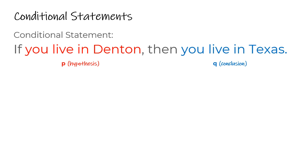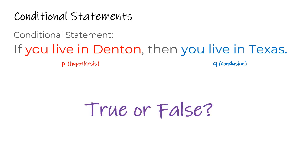To be true, there can't be a single example where this statement could be false. That would make it false if you have one way to prove it false — it's got to be true in all cases. So let's think about this: if you live in Denton, then you live in Texas. Is that true or false? Well, if you know that Denton is in Texas, that's a true statement — if you live in Denton, then you live in the state of Texas. So that is a true statement. In the next video, you'll be switching the order, so think about whether switching the hypothesis and conclusion keeps it true.